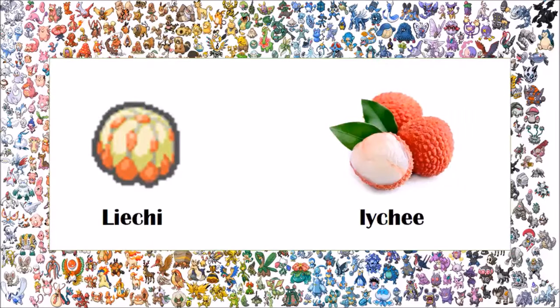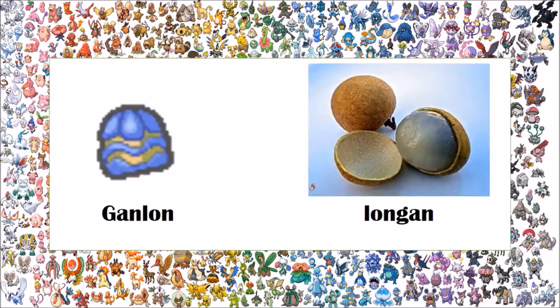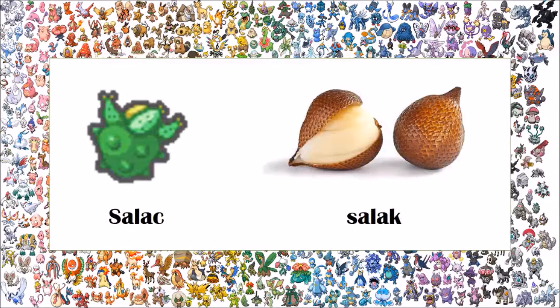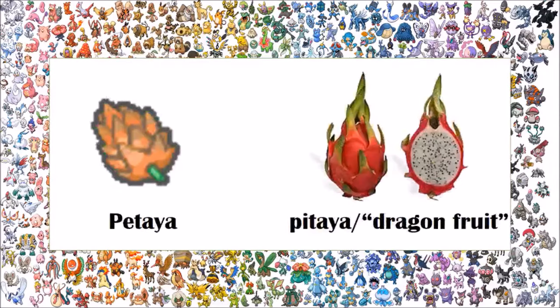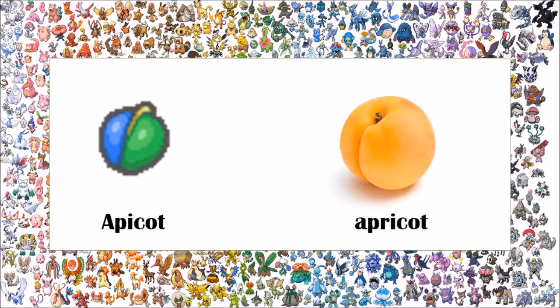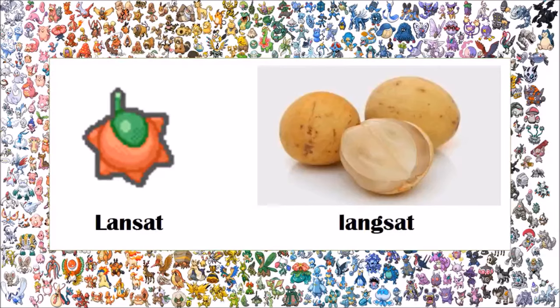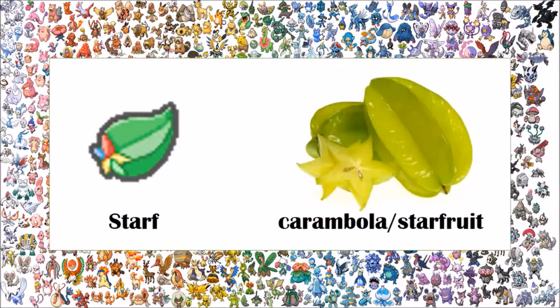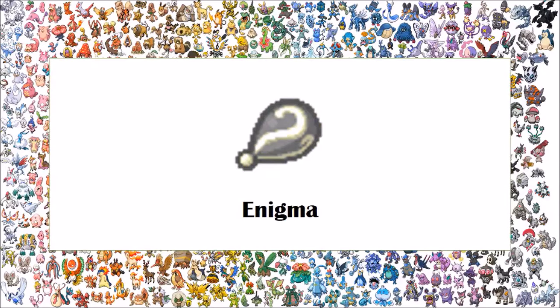The Liechi berry is based on the lychee. The Ganlon berry is based on the longan. The Salac berry is based on the salak, which isn't even an anagram or anything — just changing one letter. The Petaya berry is based on the pitaya, commonly known as the dragon fruit. The Apicot berry is based on the apricot. The Lansat berry is based on the langsat. The Starf berry is based on the carambola, commonly known as the starfruit. The Enigma berry is probably the most unique of all because it has no real-life inspiration — it is not based on a real fruit, and in every language it's based on the word 'enigma'. It is also what Gen 3 e-reader exclusive berries turn into if you transfer them to Gen 4.